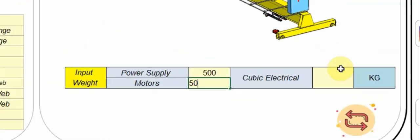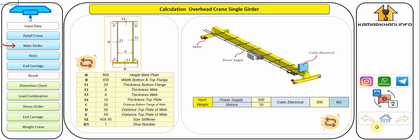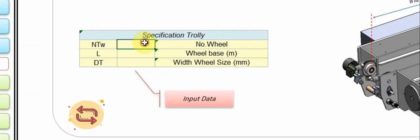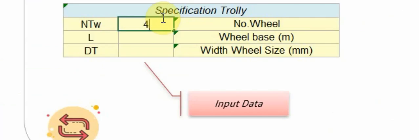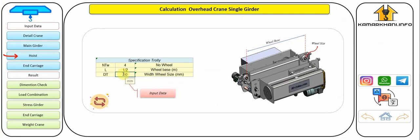Enter the weight of the equipment according to the image in the software. In this step, you must enter the elevator data. The number of wheels is very important — the number of trolley wheels can be four or eight. The width parameter of the trolley wheel is very important in determining the amount of stress applied to the bottom plate of the girder.